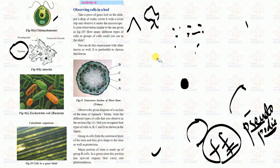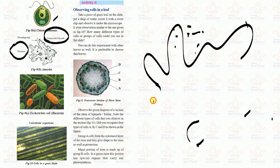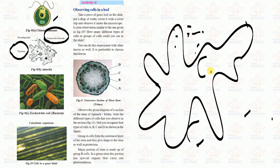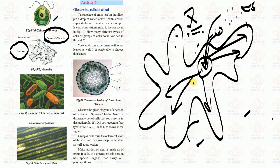Amoeba also has a contractile vacuole, which helps in getting food from other sources. For example, material from a dead small fish distributed in the water can reach the amoeba. The food material is equally distributed throughout the amoeba, which digests it, and any remaining waste is released from the other end. You will learn this process in detail in further classes.